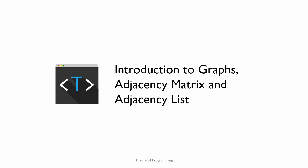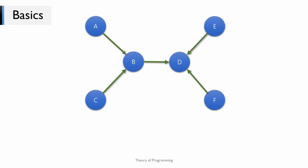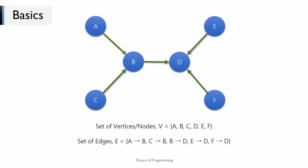If we talk about the very basic definition of a graph: a graph is a set of vertices or nodes and a set of edges. For this graph, the set of vertices would be the blue circles A, B, C, D, E, and F, and the set of edges would be A to B, C to B, B to D, etc.